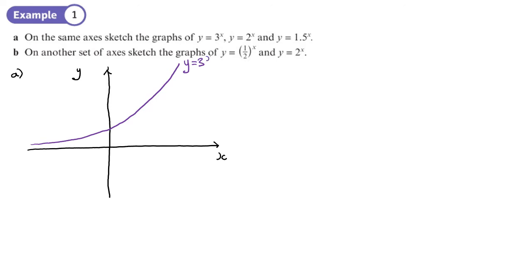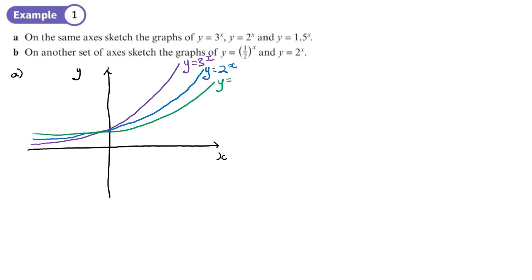Now let's do 2 to the power x. What you'll find is that y equals 2 to the x crosses at the same place on the y-axis, is slightly higher on one side, but slightly lower on the other side. Then y equals 1.5 to the x is a bit higher on one side and a little flatter on the other. These are only sketches.